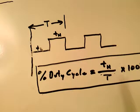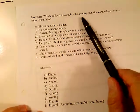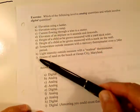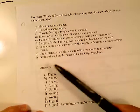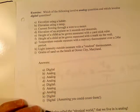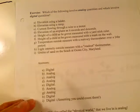On page number four, there's an exercise. It says, which of the following involve analog quantities and which involve digital quantities? I want you to look through these, A through I, and I want you to look at the answers, and make sure, in this course, you can recognize analog quantities and digital quantities.